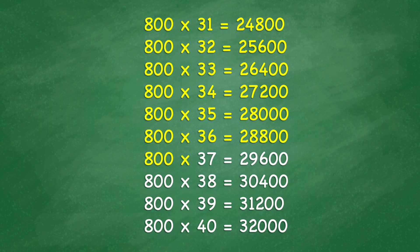800 times 37 equals 29,600. 800 times 38 equals 30,400. 800 times 39 equals 31,200.